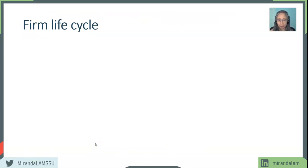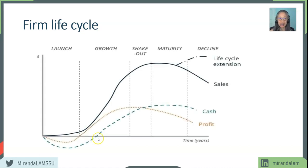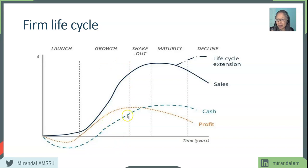A picture is oftentimes worth a thousand words, so let's take a look at the life cycle of the firm. In terms of cash flow, at the launch phase, cash flow is typically negative as well as profit. As the firm reaches the growth stage, both profit and cash flow will be positive. As the company reaches maturity, it can extend rather than going into decline. During the maturity stage, it is not uncommon for cash flow to be higher than profit, due to the various factors we talked about.